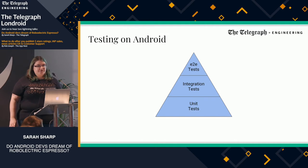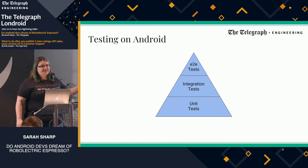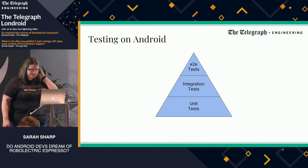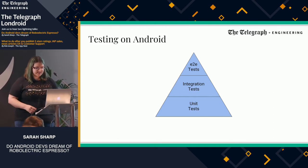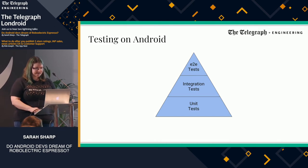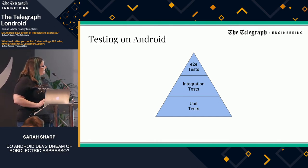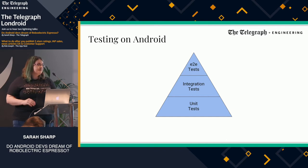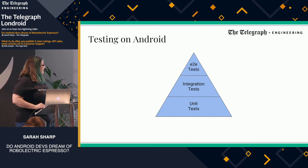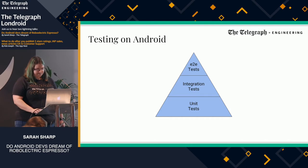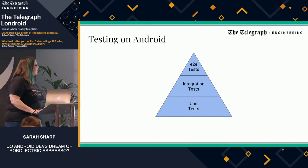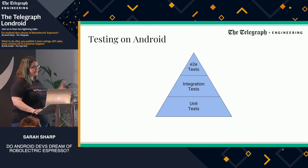I'm going to be talking about testing on Android. You might have seen this structure before — it comes up sometimes. Google are quite forward on trying to get a good ratio of unit tests, integration tests, and end-to-end tests. So we have the classic testing pyramid, dealing with different kinds of tests for Android: unit tests, integration tests, end-to-end tests.